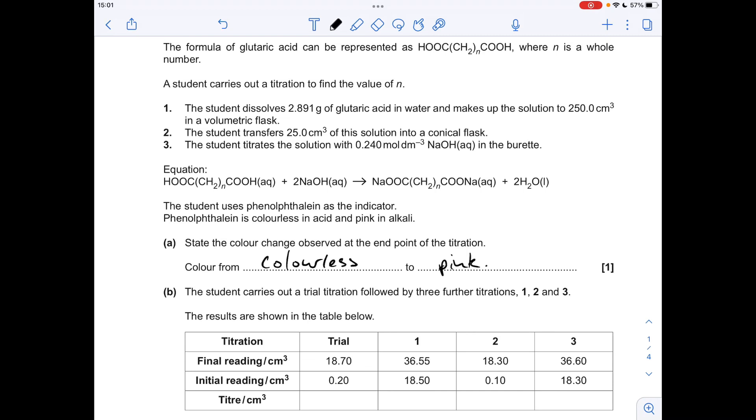Moving on to the titres, the important thing to say here is the titres must be recorded to the nearest 0.05 centimetres cubed. So there's the four numbers there, but you must have these zeros here, and obviously that needs to be there as well.